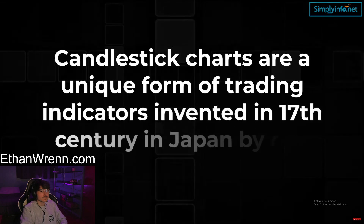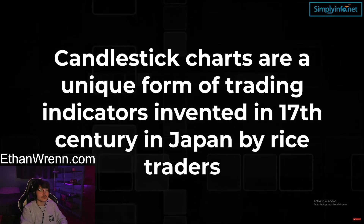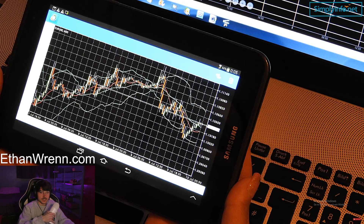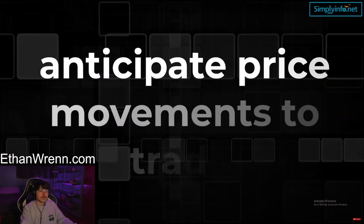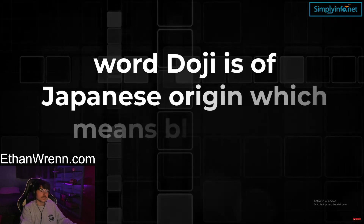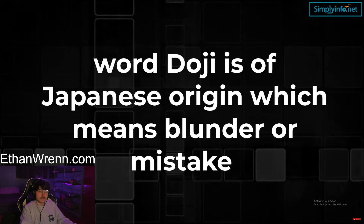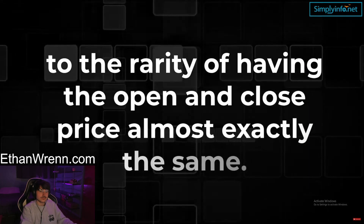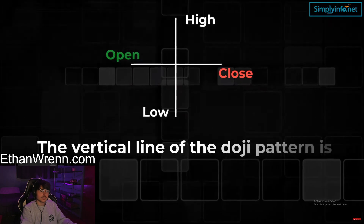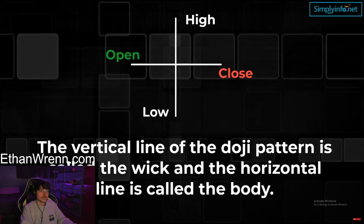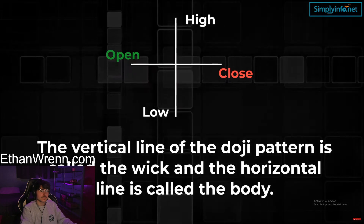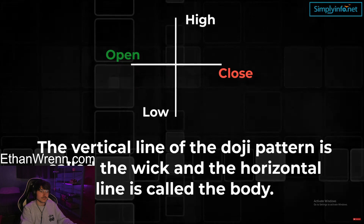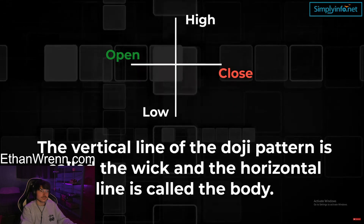Candlestick charts are a unique form of trading indicator invented in 17th century Japan by rice traders. They display the high, low, open, and closing prices of a security for a specific period. The word 'doji' is of Japanese origin, meaning 'blunder' or 'mistake,' referring to the rarity of having the open and close price almost exactly the same. The vertical line is called the wick, and the horizontal line is called the body. The wick can vary in length — the top represents the highest price, the bottom the lowest — while the body represents the difference between opening and closing price.